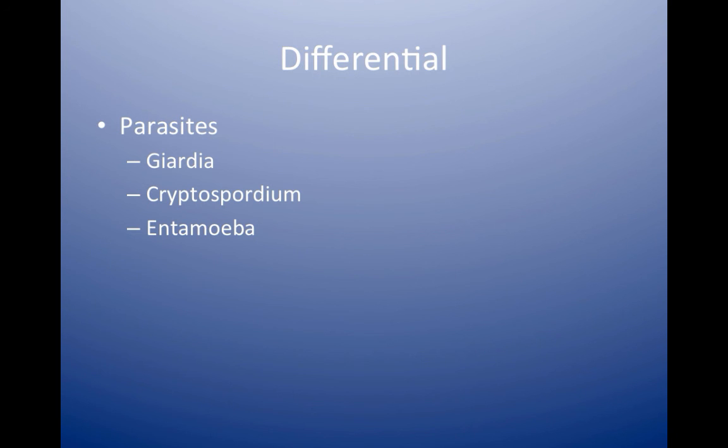Giardia can be seen in campers and people who have exposure to creek water or stream water. Cryptosporidium is common in HIV patients. Non-HIV patients can also get it, and it's also associated with outbreaks. Entamoeba is usually seen in travelers, and it's more of a dysentery or bloody diarrhea.